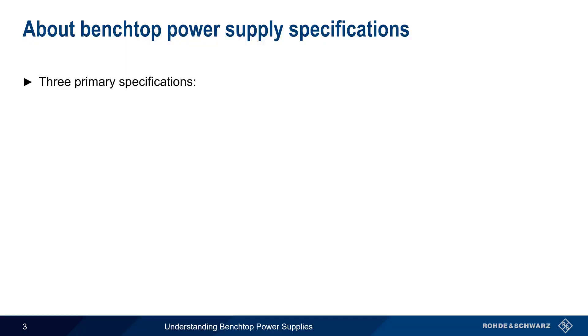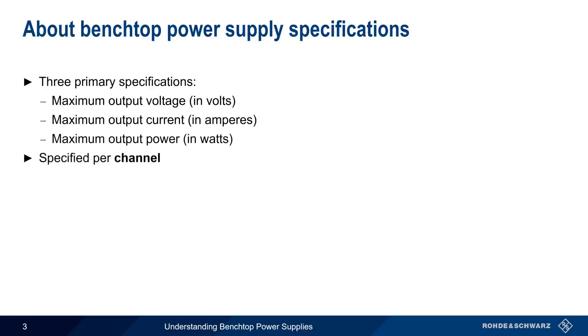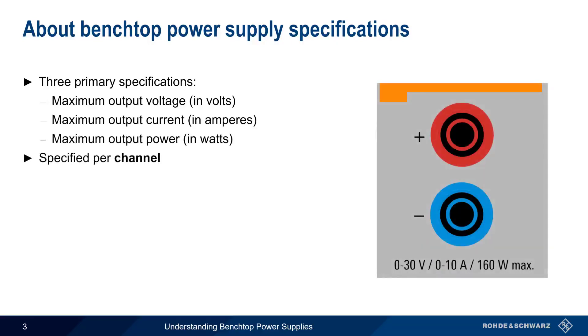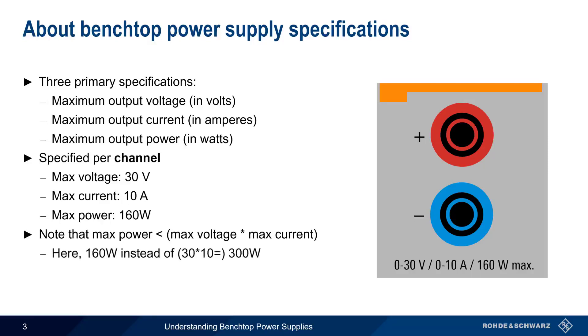The most basic specifications of a power supply are the maximum output voltage, the maximum output current, and the maximum output power. These are usually specified per channel. For example, this channel has a max voltage of 30 volts, a max current of 10 amps, and a maximum power of 160 watts. It's important to note that the max power is less than the max voltage times max current. Here, the maximum channel power output is 160 watts, and not 300 watts.